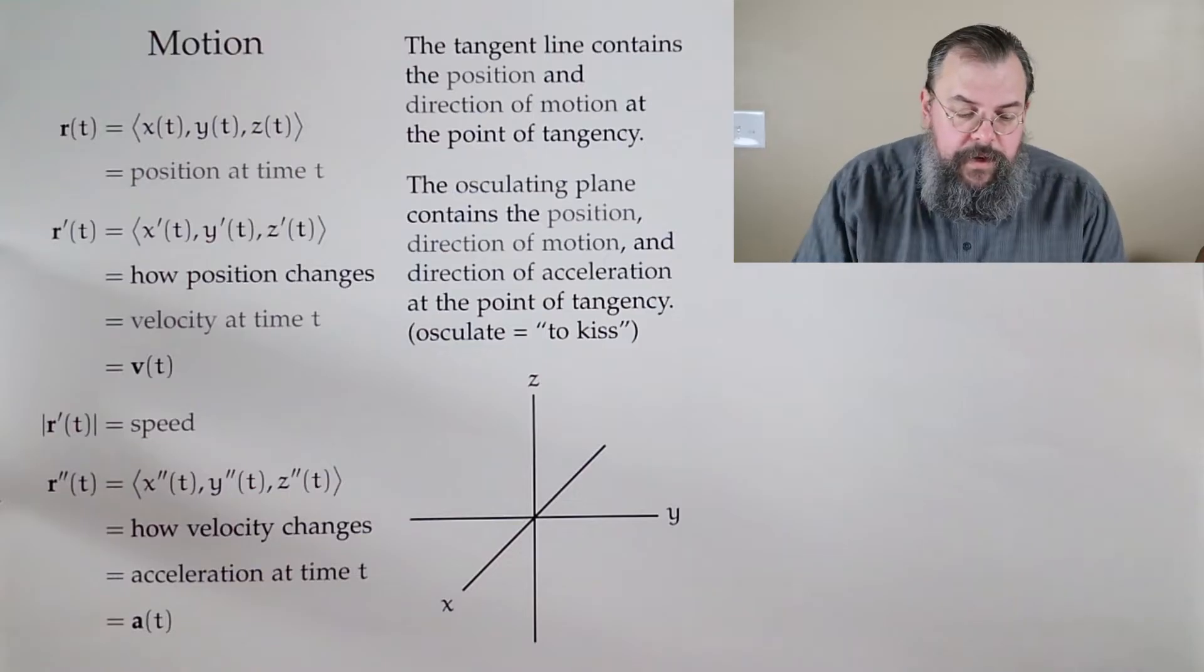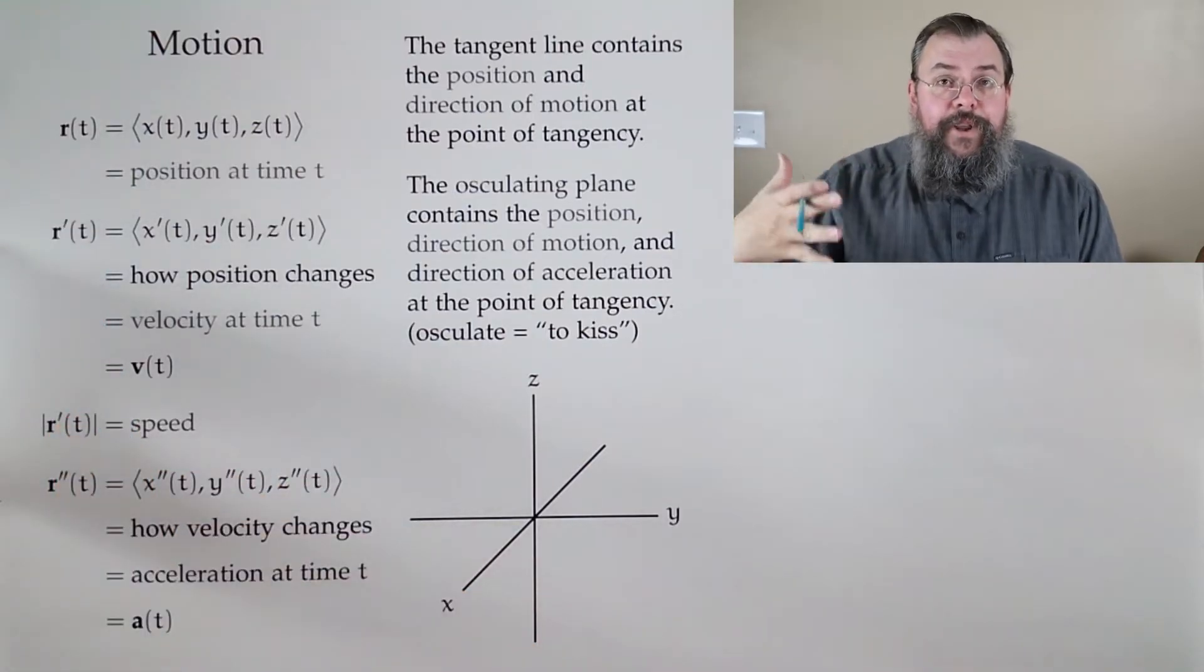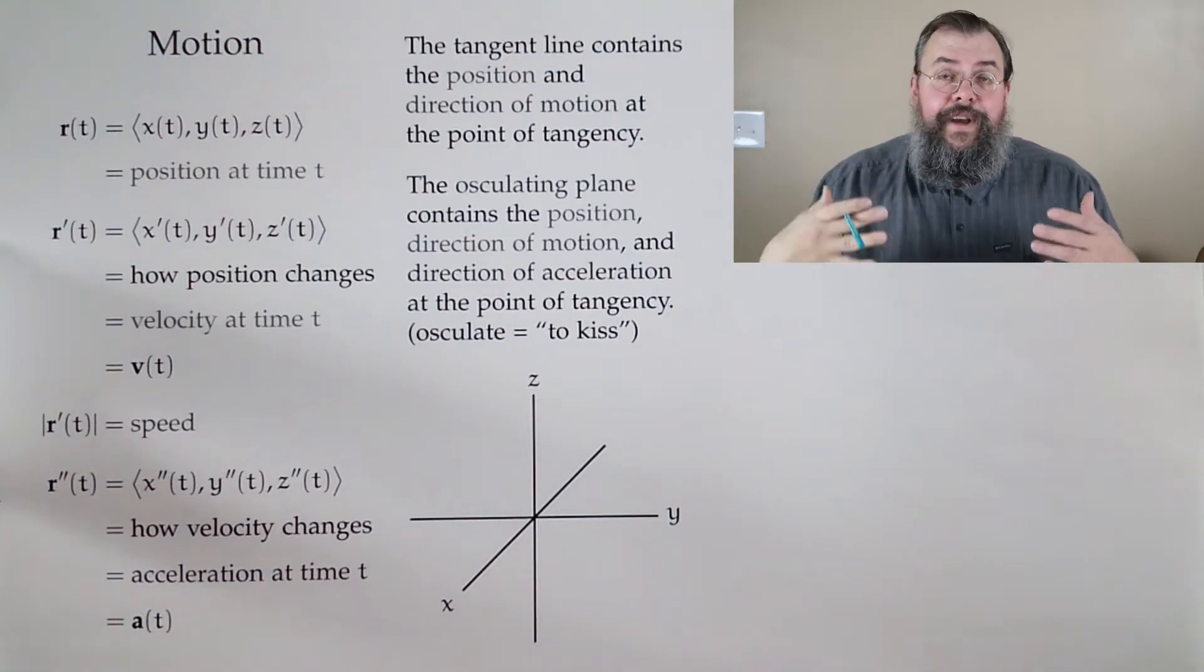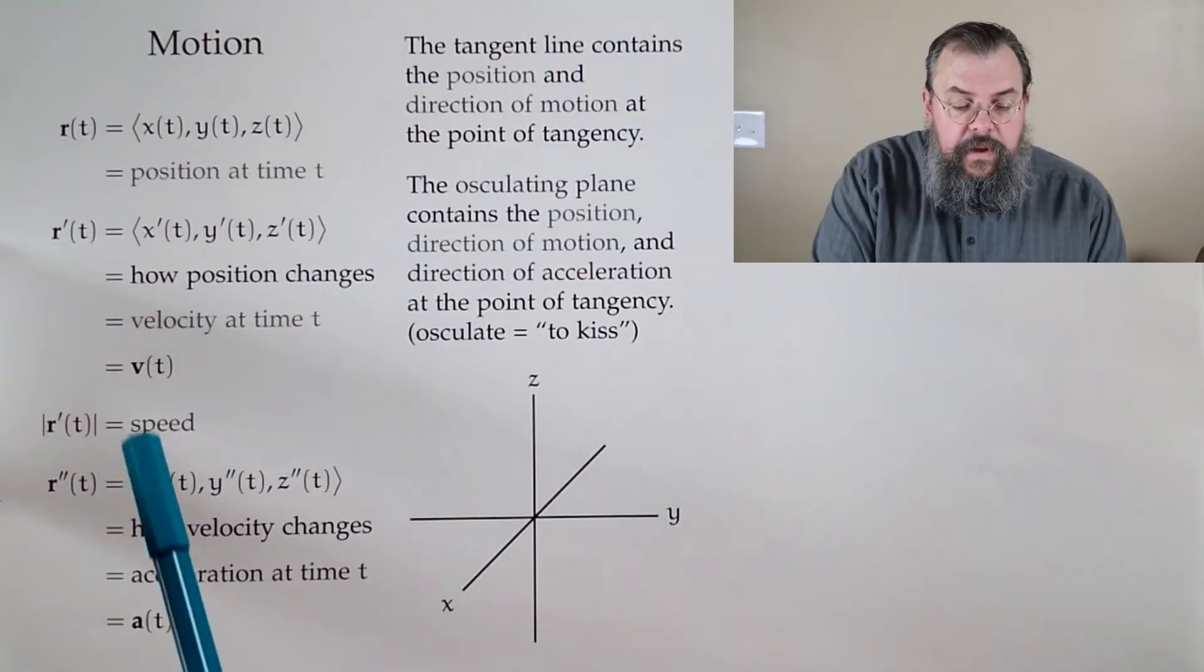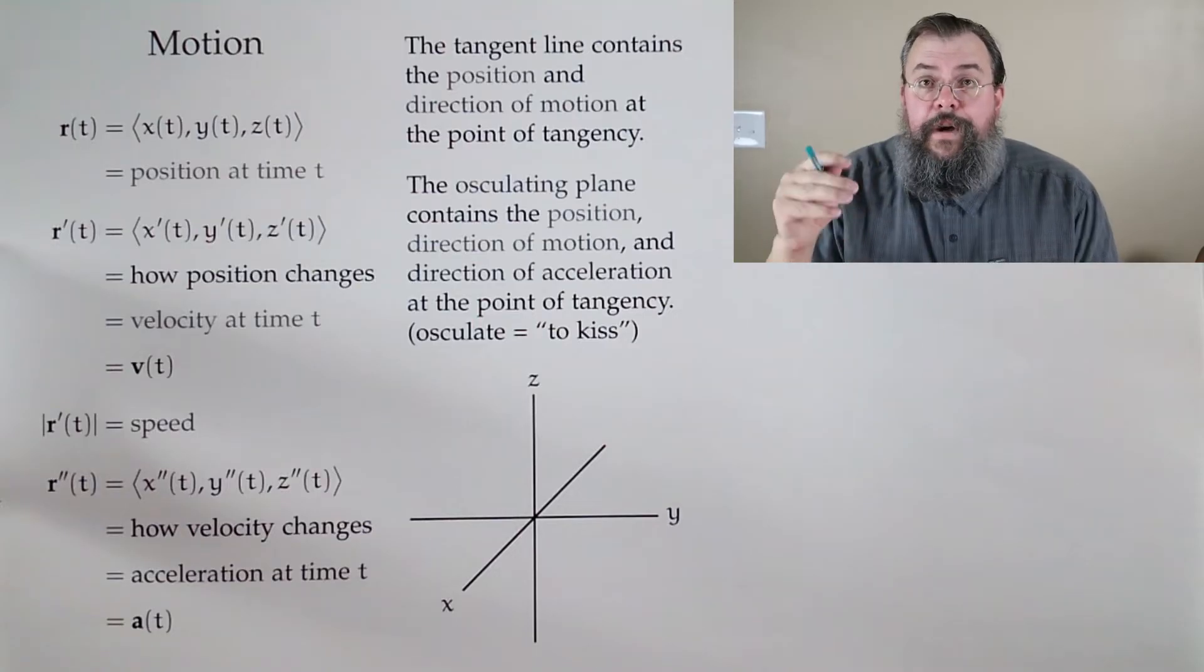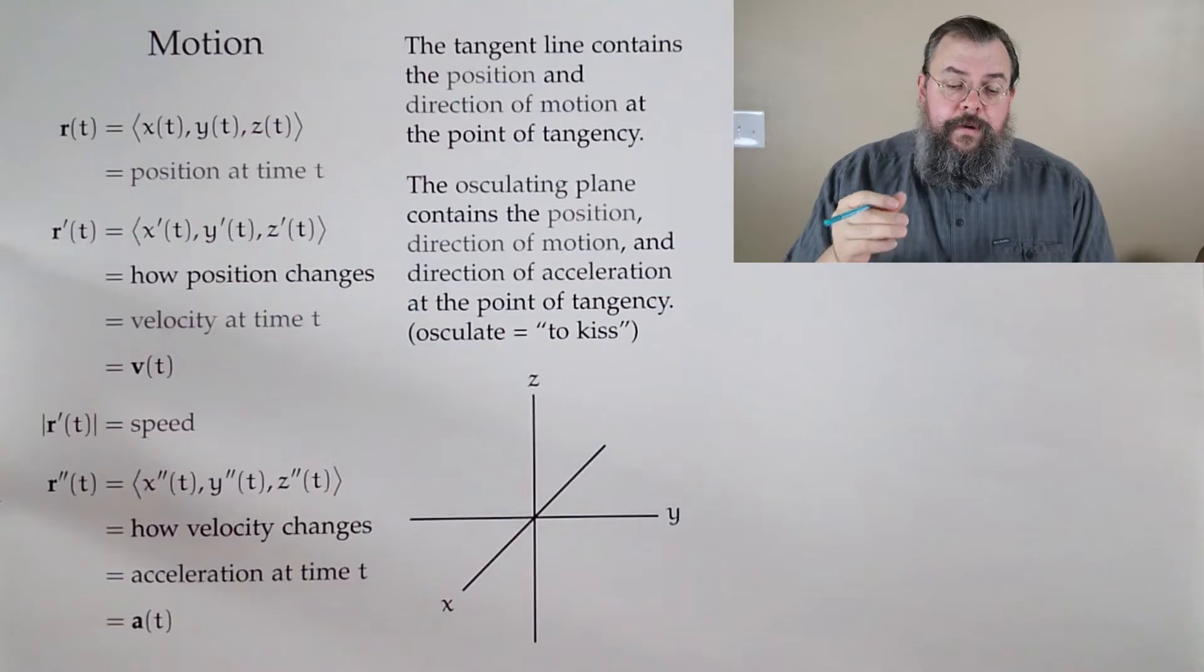So what do we have? We're going to have our position function, and we're going to think of everything in terms of vector-valued functions, because we want to do calculus. So we have our x, y, and z, and that gives us, at any time, our location, our position. Where are we?